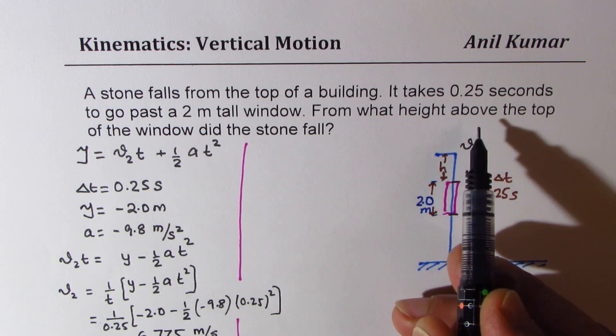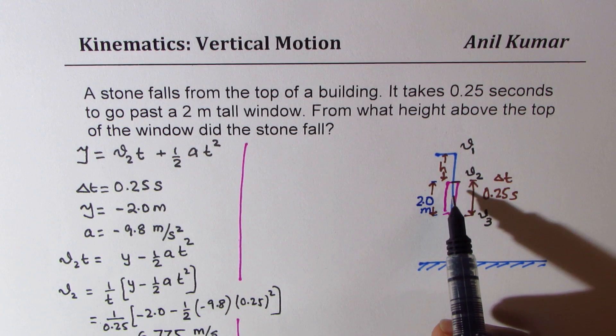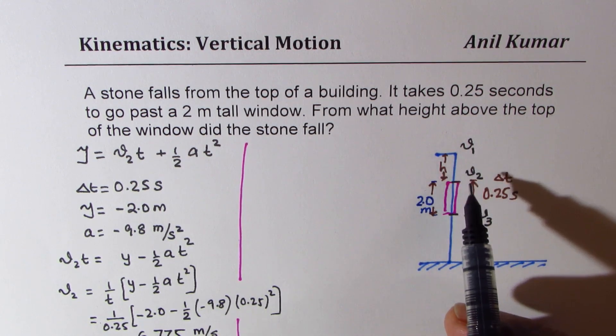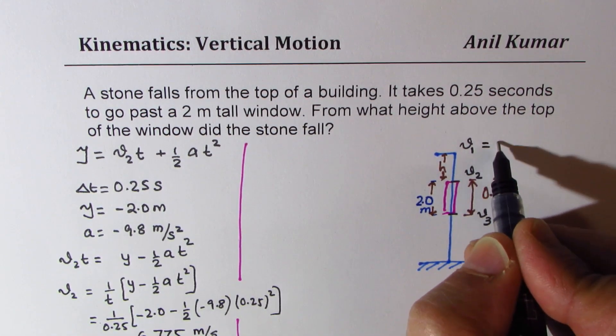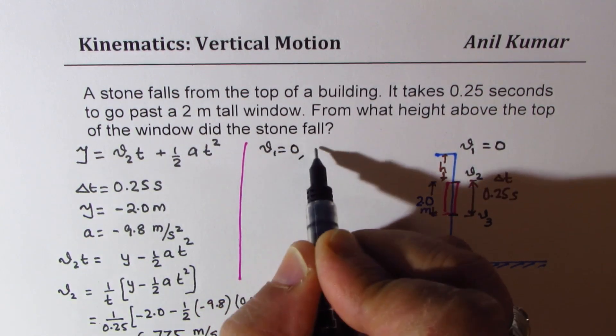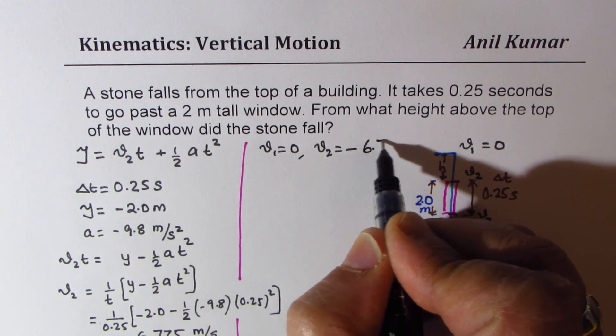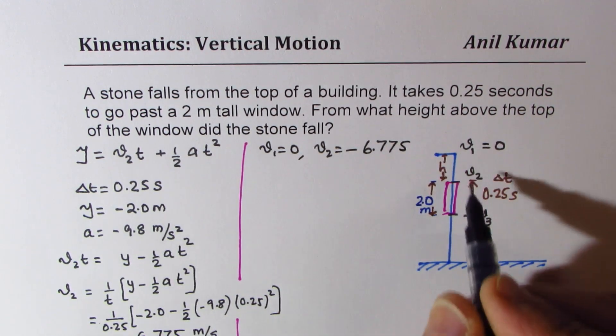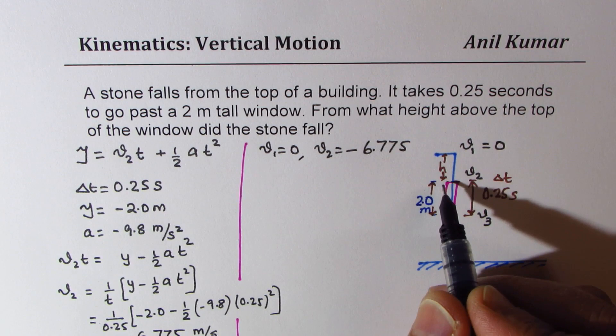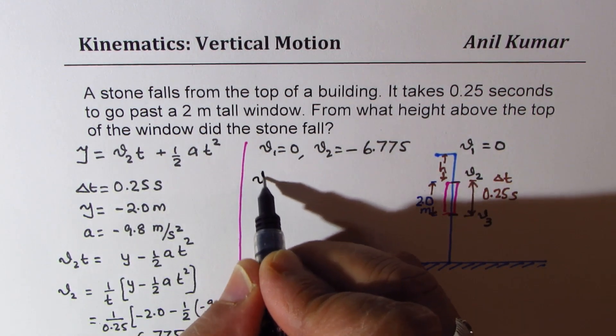We need to find the height above the top of the window. When the stone is falling, v1 is 0, so we know that v1 is 0, v2 is minus 6.775, and the height is h. So we can write the difference of these velocity squares.